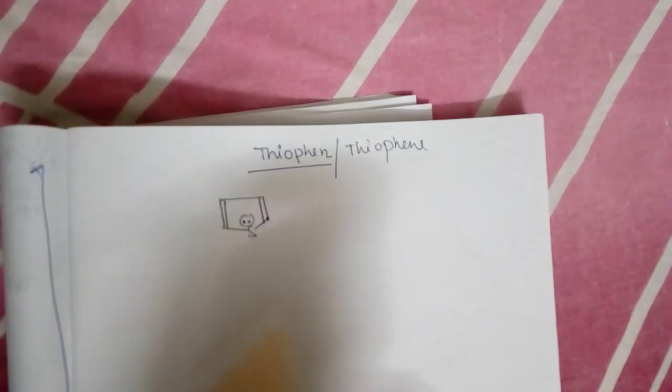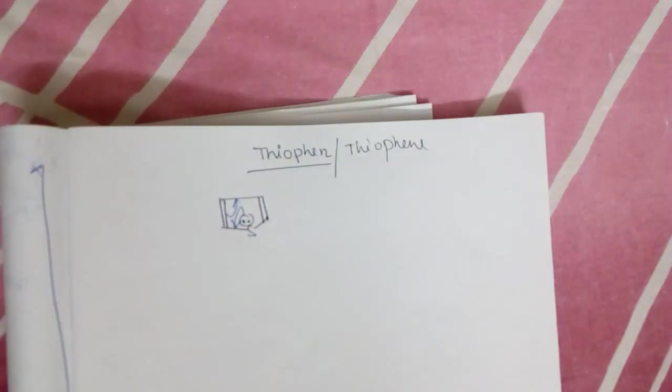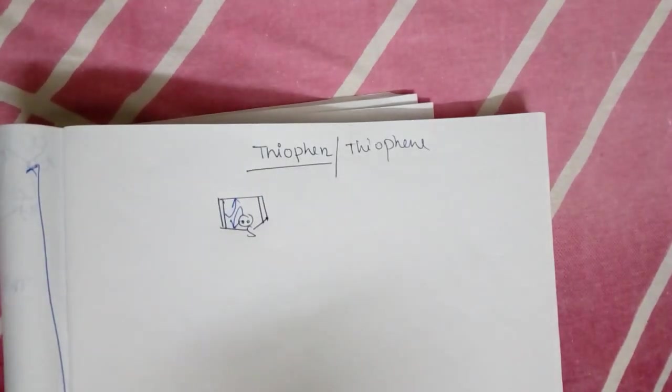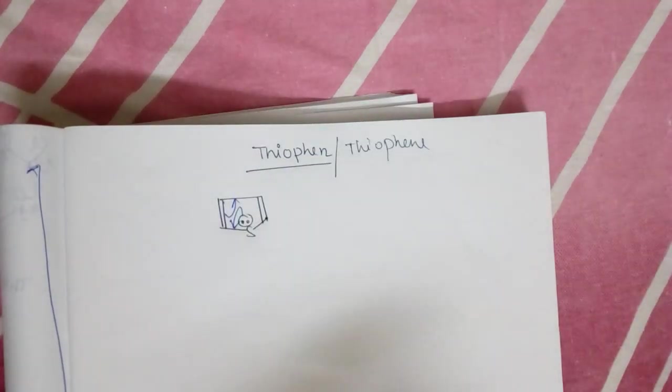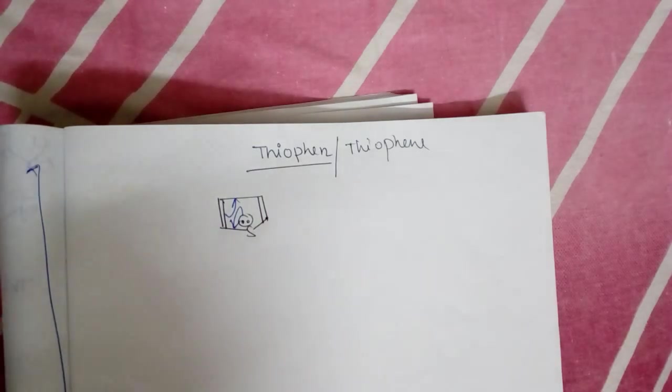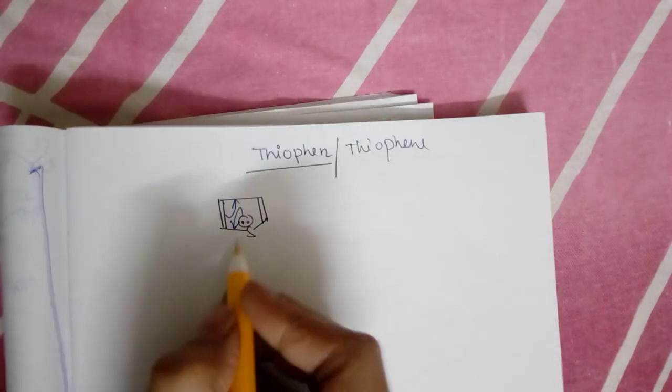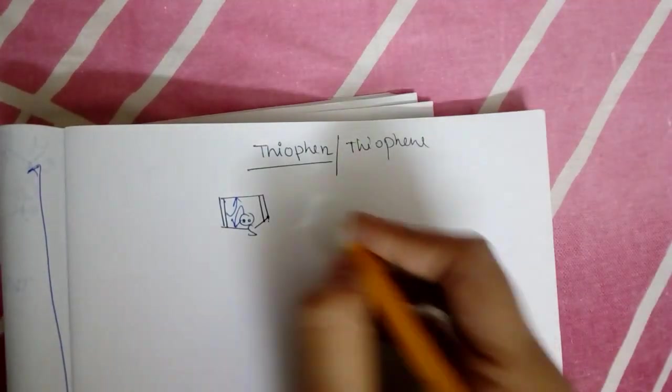The lone pair of sulfur goes to resonance with the ring due to gaining aromatic stability. If this lone pair of sulfur goes to conjugation with the ring, then it forms a six pi electron system (one, two, three, four, five, six), hence it becomes aromatic. Aromatic compounds are always more stable.